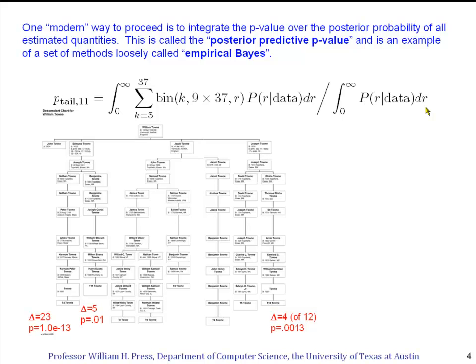So I've done that. I used Mathematica to do the numerical integrals over R here. You don't have to do them very accurately. We're only interested in one or two significant figures on the p-value. And here's how the results came out. Well, remember this guy down here, this is T2, and he had 23 mutations. And the chances that he is actually a descendant of William Towne, I should say the p-value for that hypothesis, is 1 times 10 to the minus 13. That's pretty much ruled out.